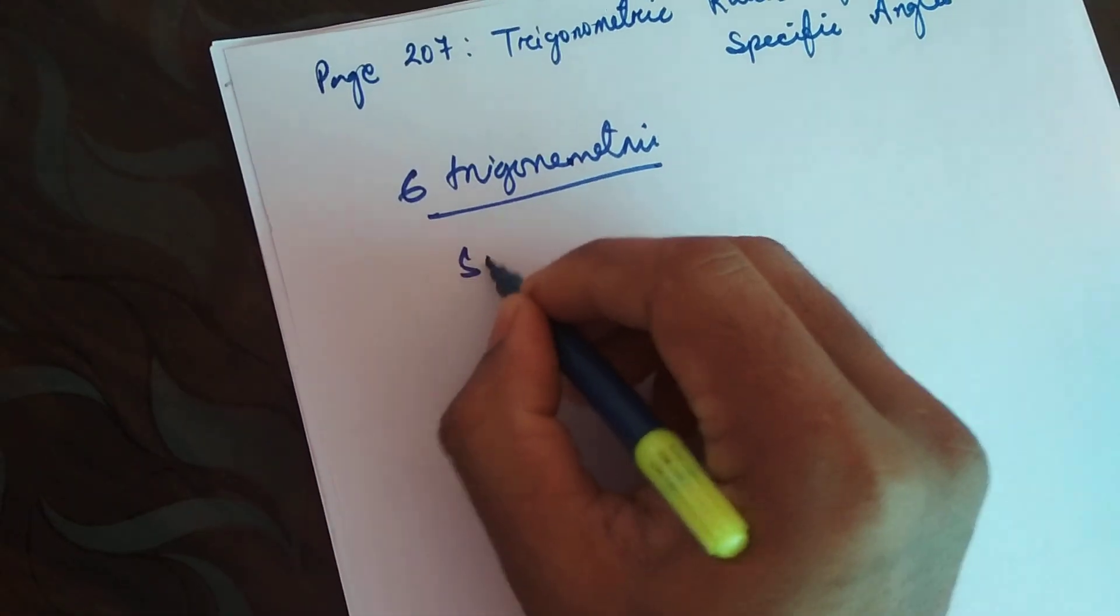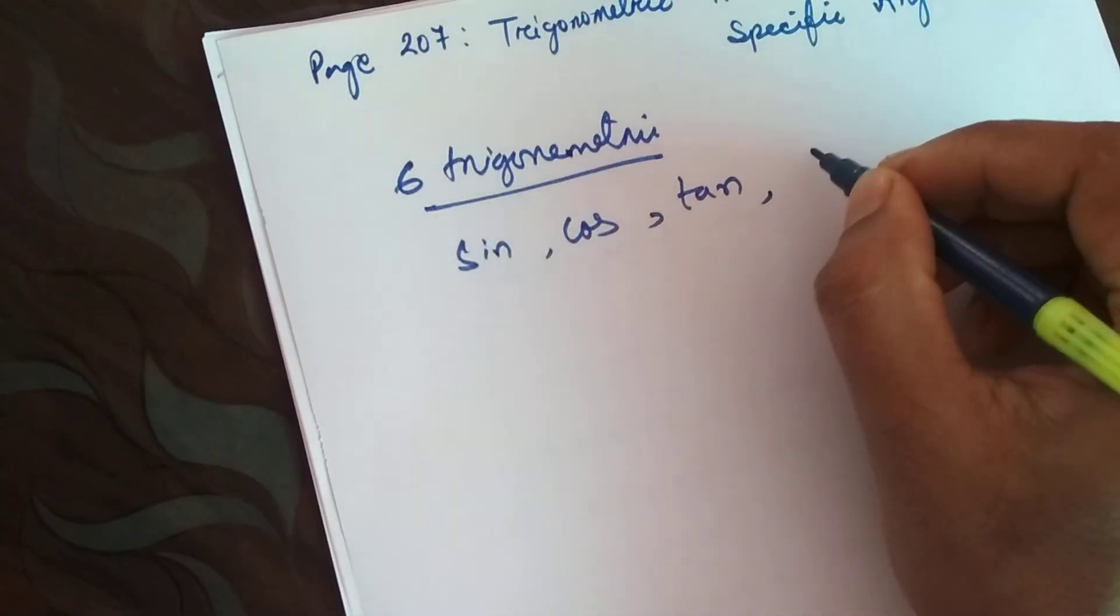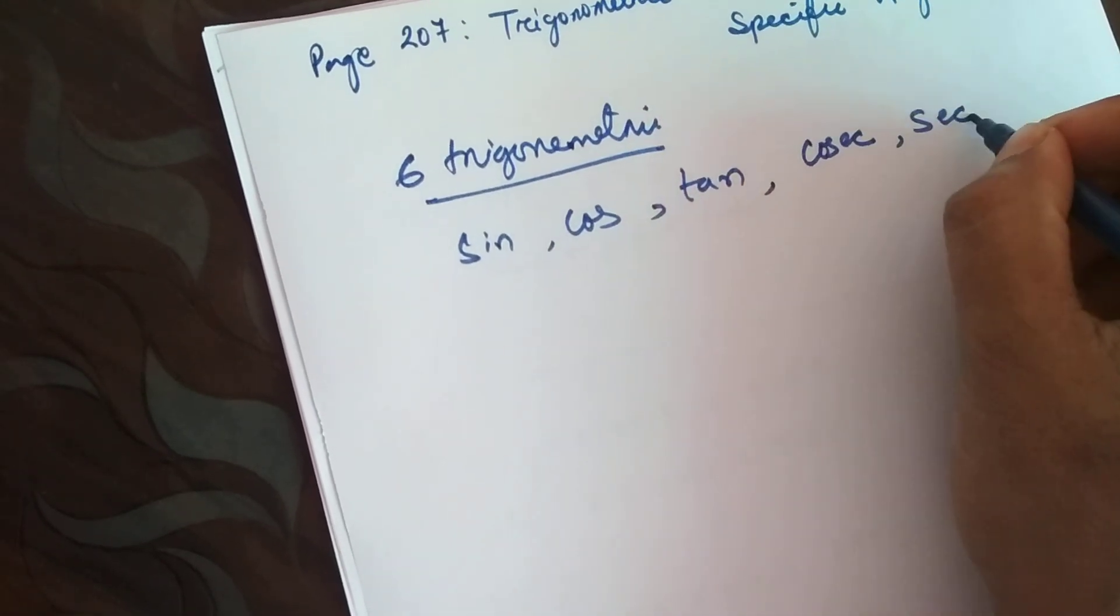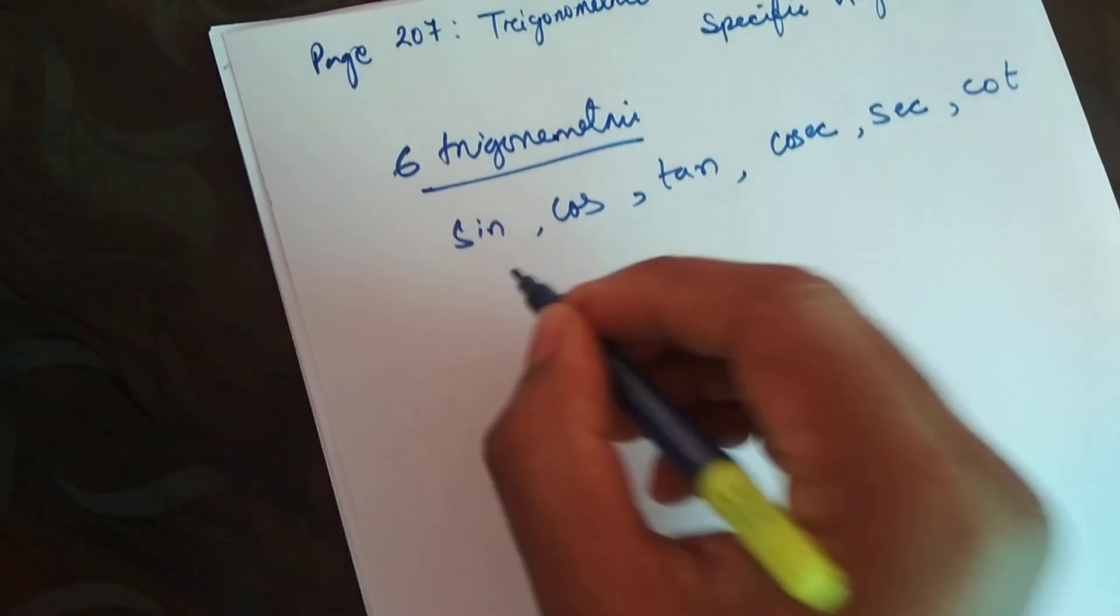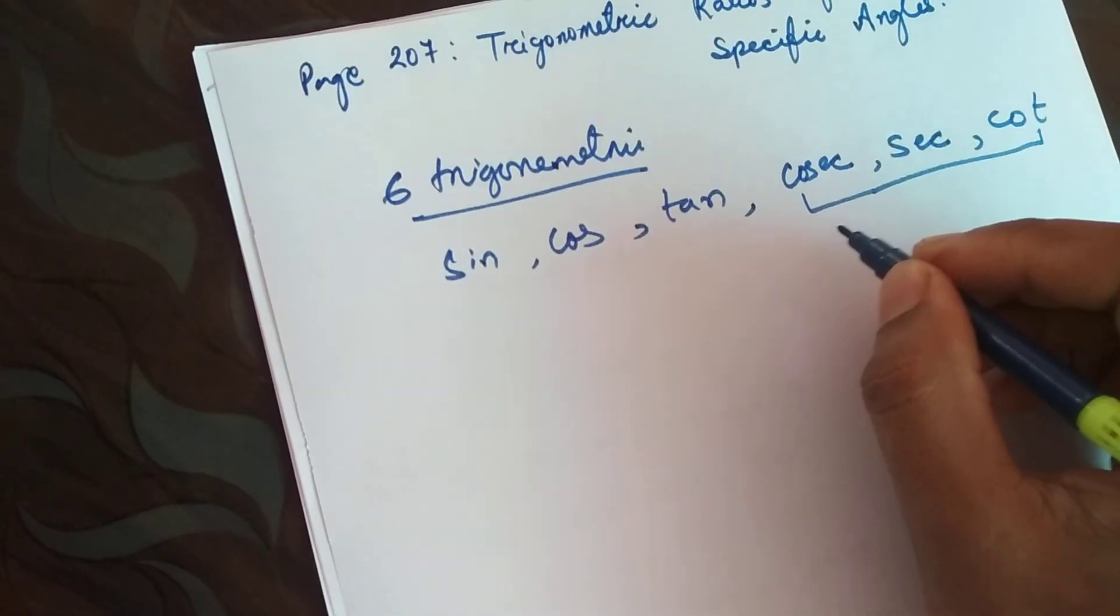They are sine, cos, tan, cosec, sec, and cot. Out of these, these three can be written in separate form.